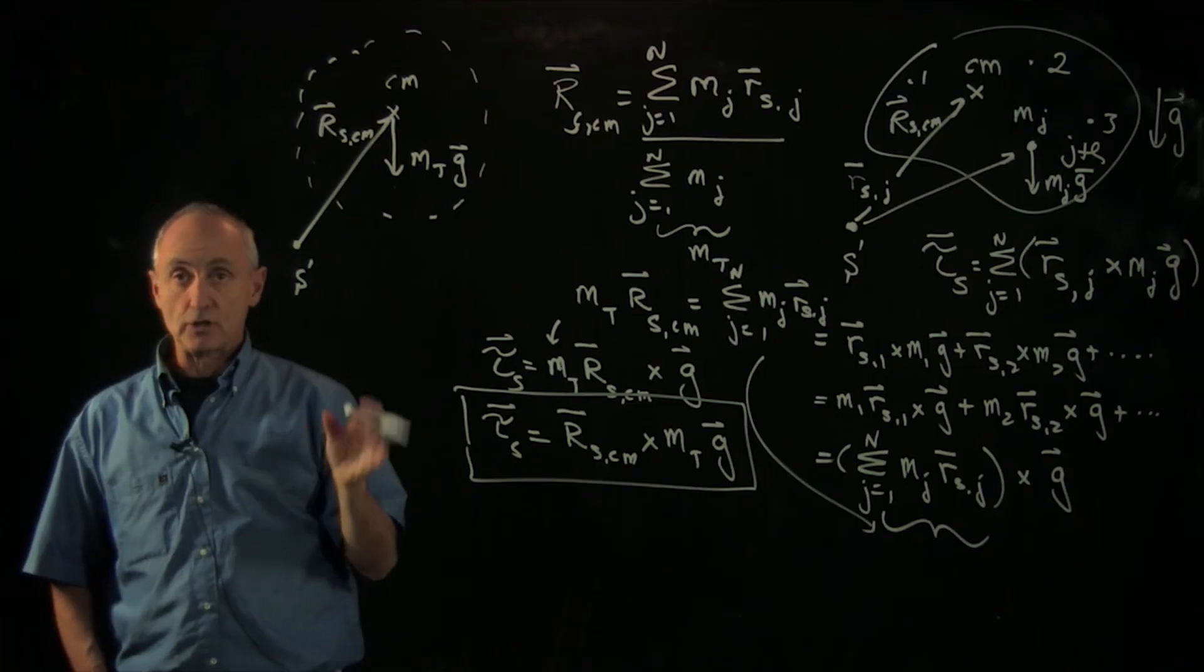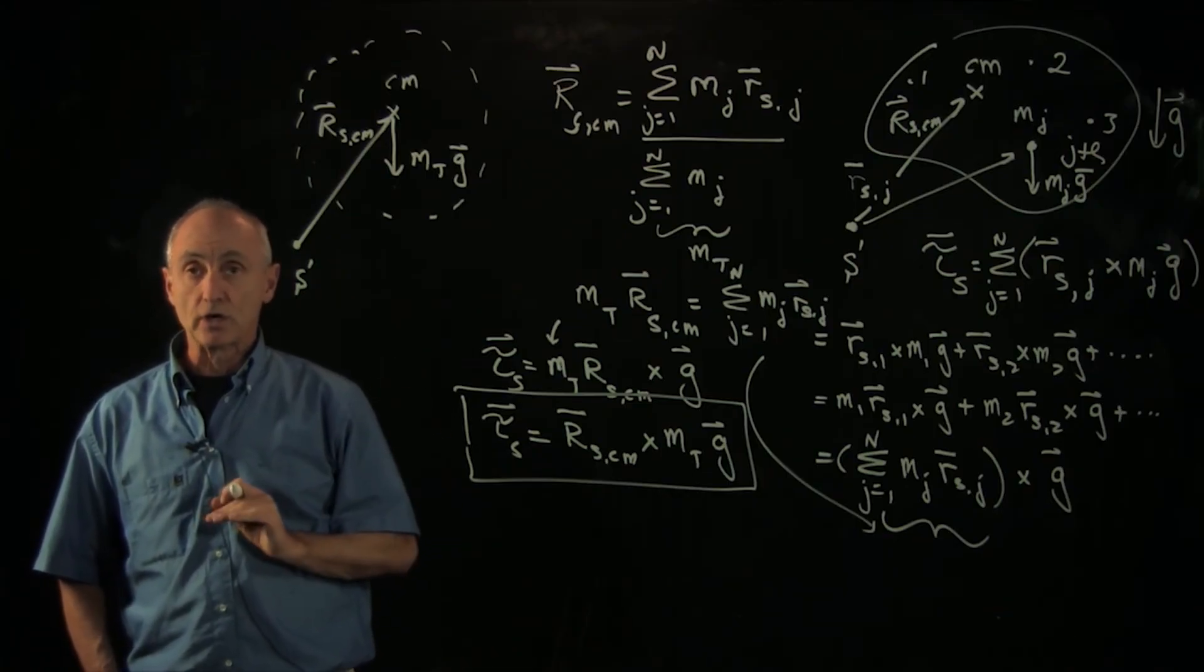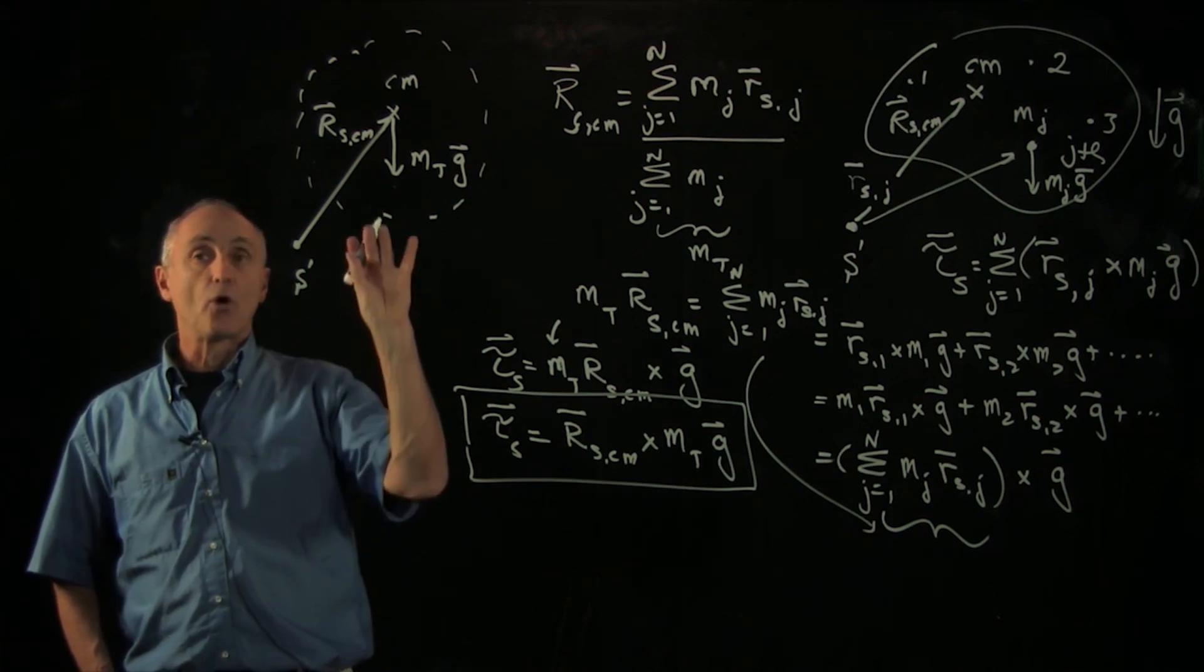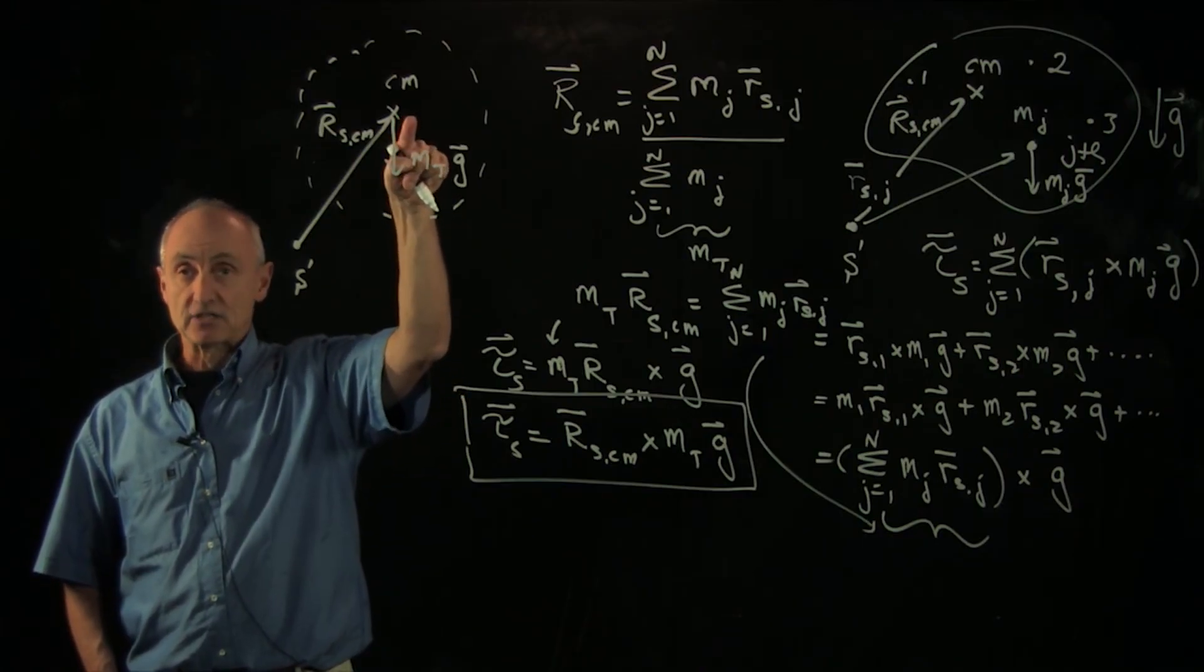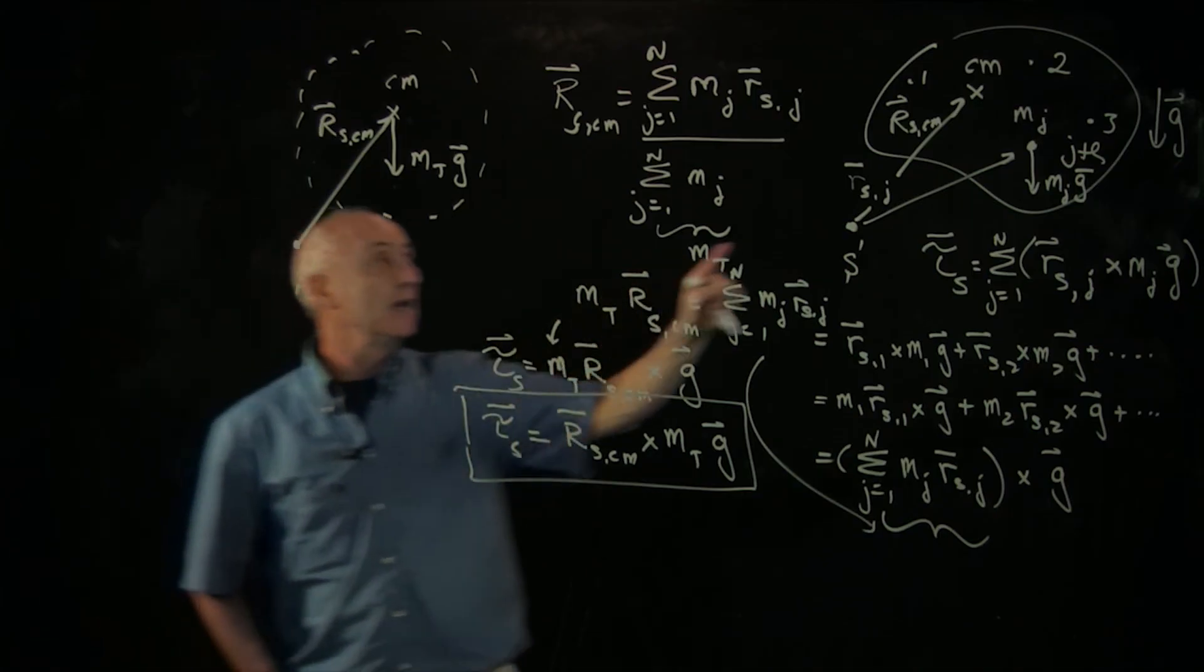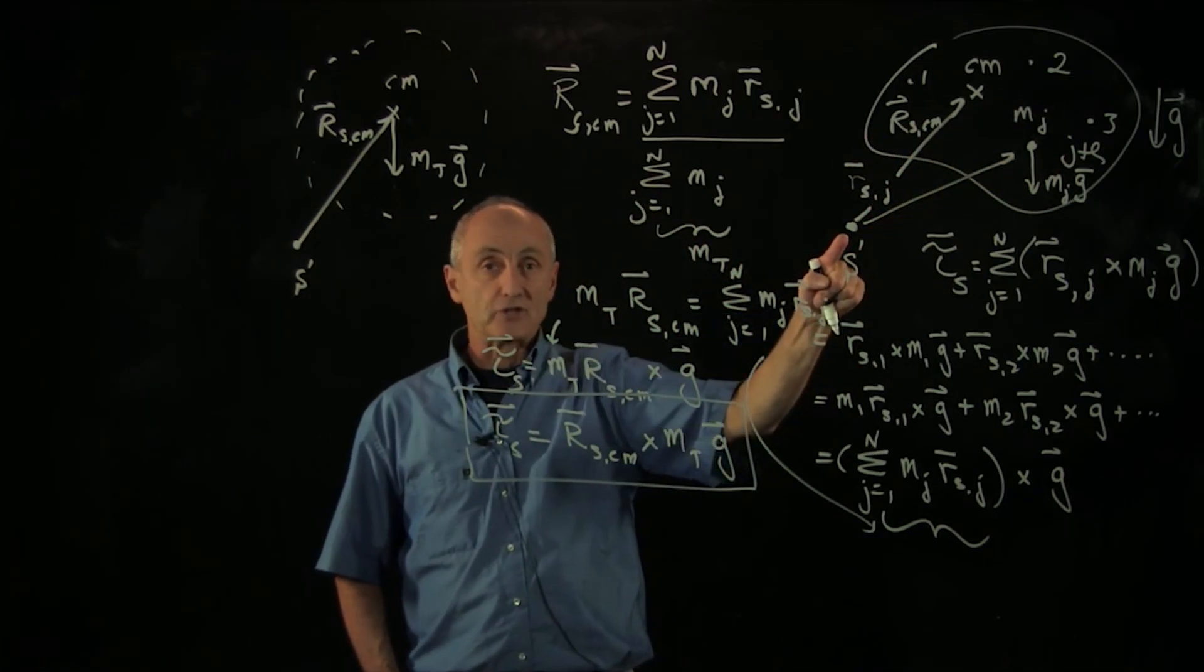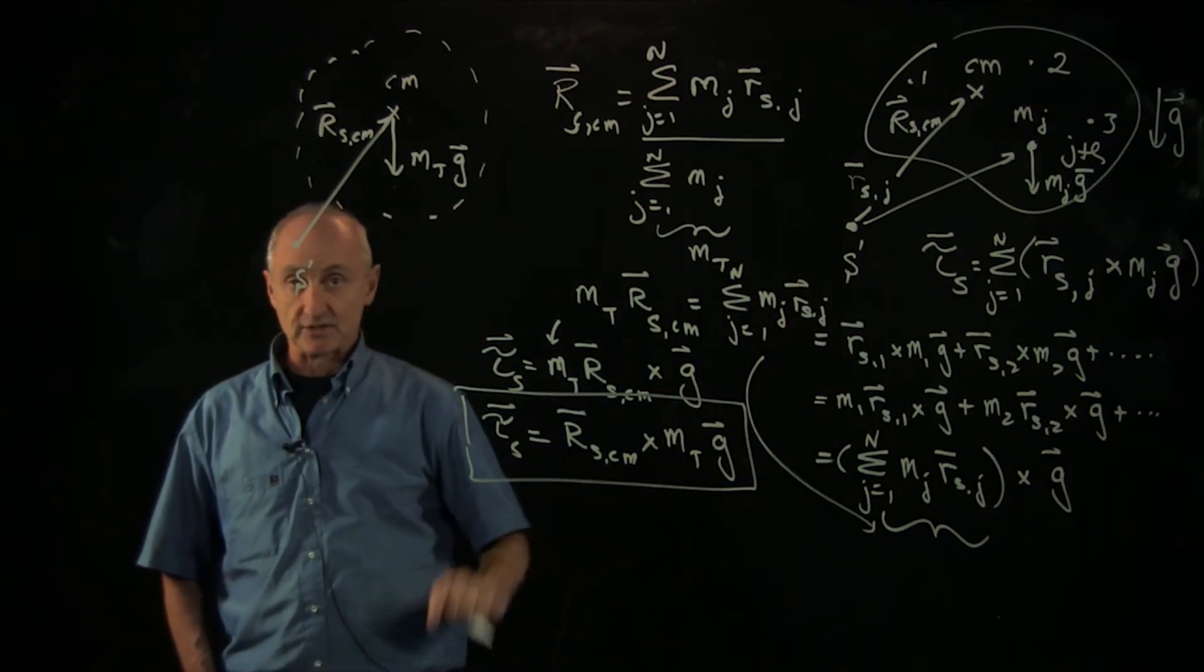So in conclusion, when you have a rigid body or a system of particles, and you want to calculate the torque due to a uniform gravitational field, then the total gravitational force is acting at the center of mass. And that gives us the torque about s to the individual torques of the system of the gravitational force about s. All the force is placed at the center of mass.